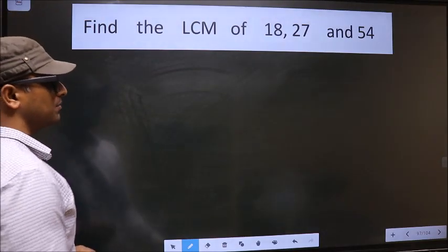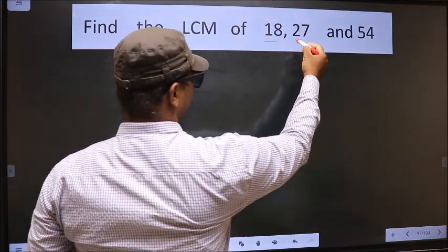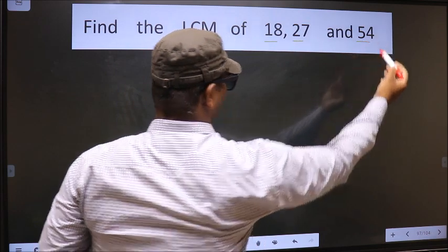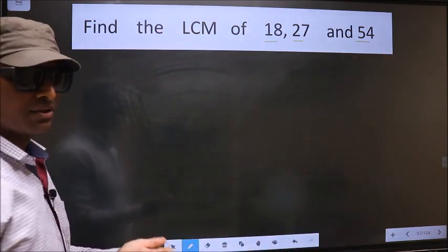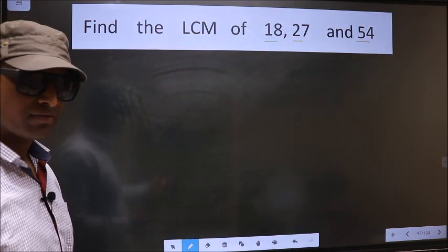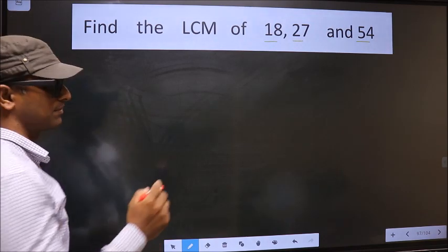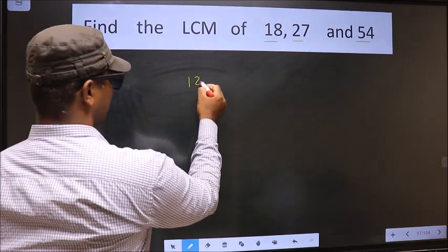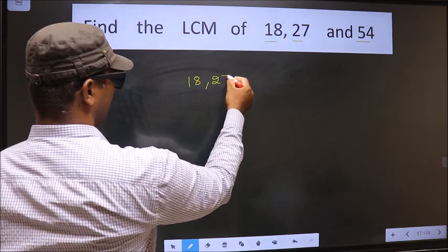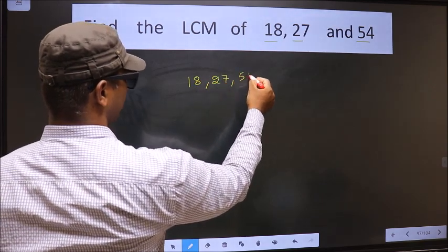Find the LCM of 18, 27, and 54. To find the LCM, first we should frame it in this way. See, that is 18, 27, 54.